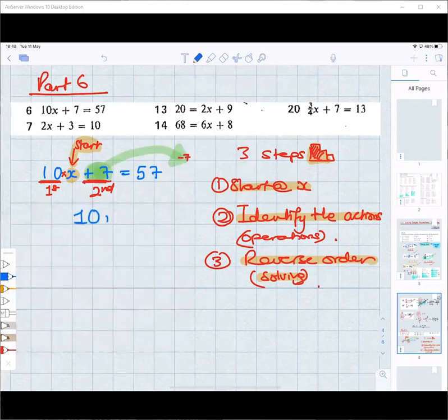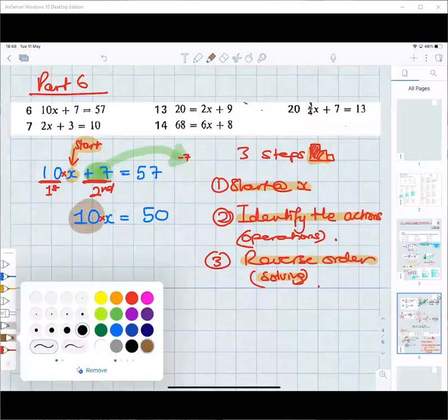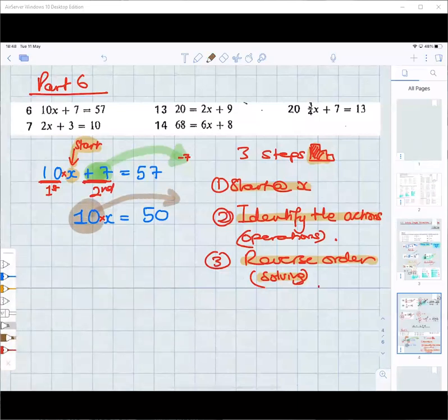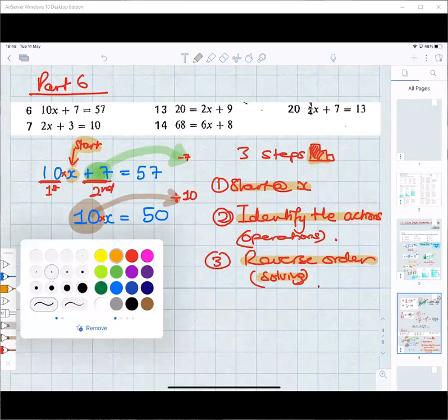So what do we have left over now? 57 minus seven is 50. And what's left on the left-hand side? Times by 10. The 10x part is still left over. We have to deal with that now. What do we do now with the time by 10? We divide by 10 and take it to the other side. And it becomes a divide by 10. Opposite times is divide. Lovely. So what's the answer going to be for X then? Copies X down, copied equal down. What's 50 divided by 10? 5. Is that your final answer? Yes. Excellent. That's well done.